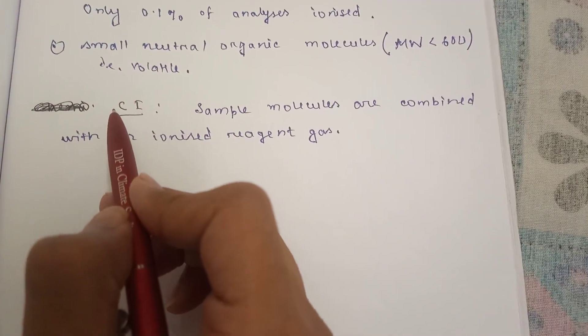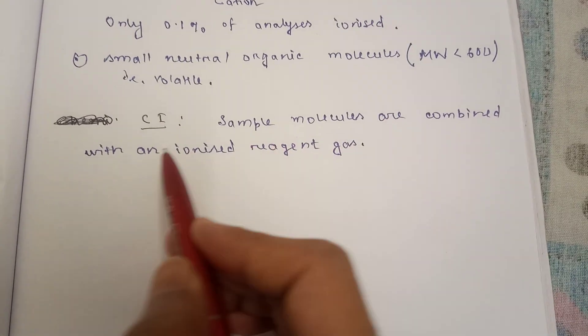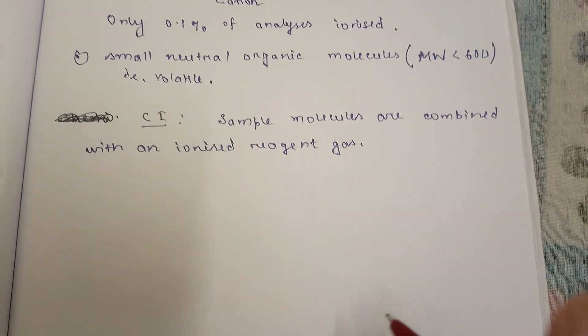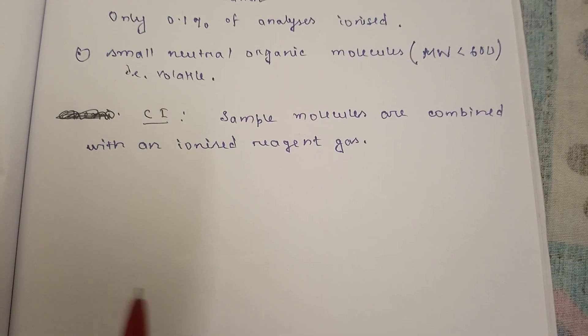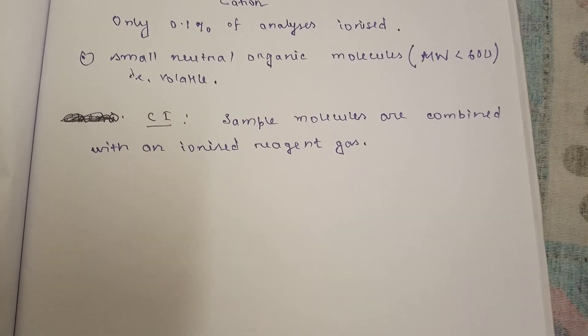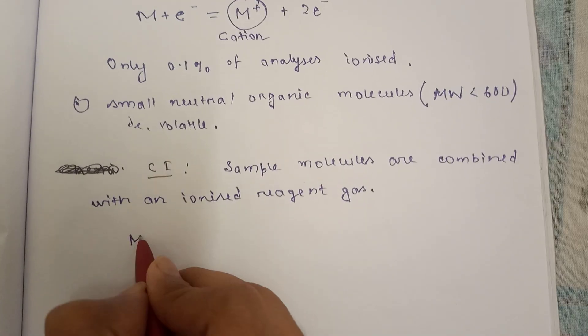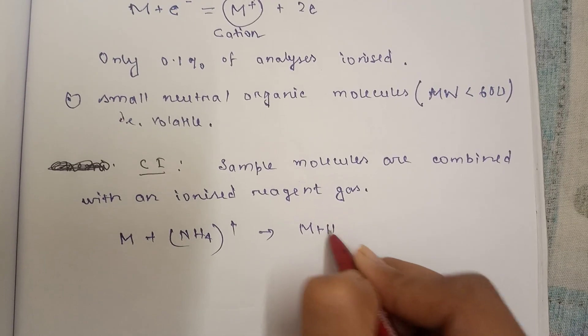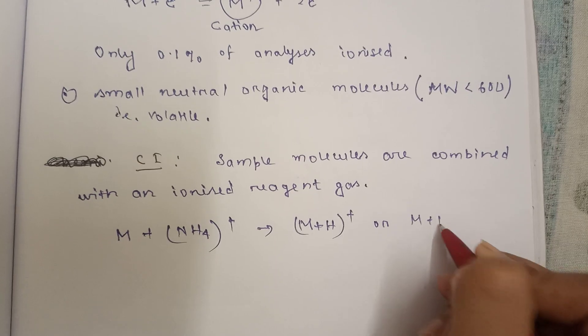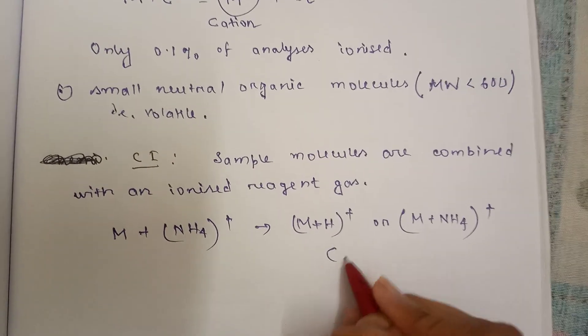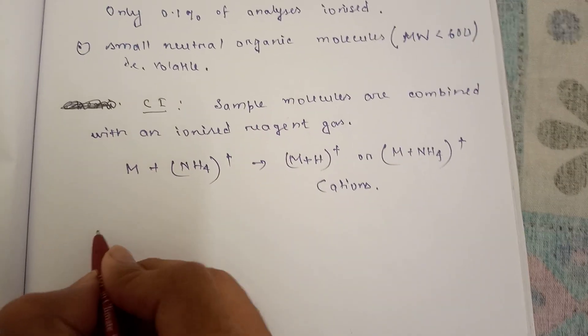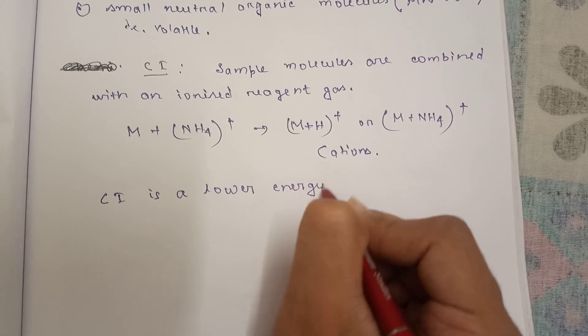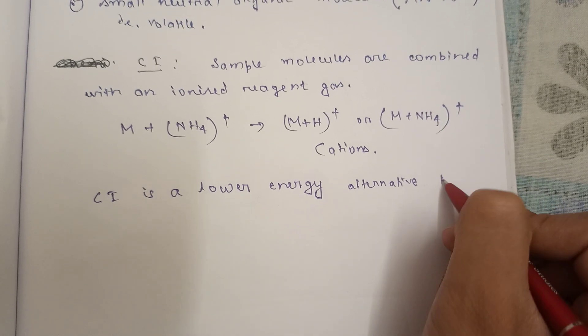The second method is chemical ionization. The sample molecules are combined with an ionized reagent gas. When the sample molecules collide with the ionized reagent gas, some of the sample molecules are ionized. There can be various mechanisms like proton transfer, electron transfer, or adduct formation. If M is the sample and it's hit by NH4 plus, it can create M plus H plus or M plus NH4 plus. These are cations. CI is a lower energy alternative to EI.